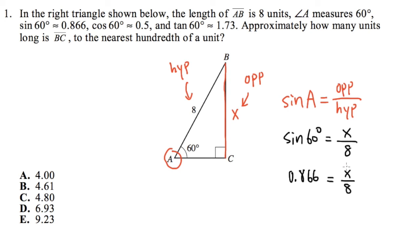Now you see, x over 8 means x divided by 8. We can just multiply both sides by 8, so we can cancel the 8 out. That way, we can get x by itself.